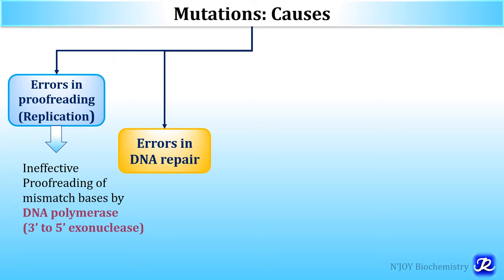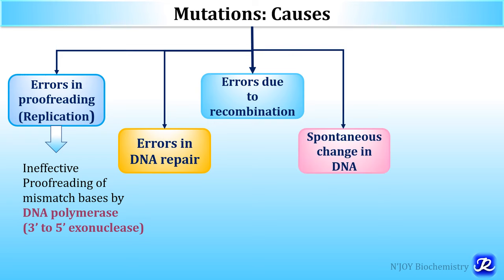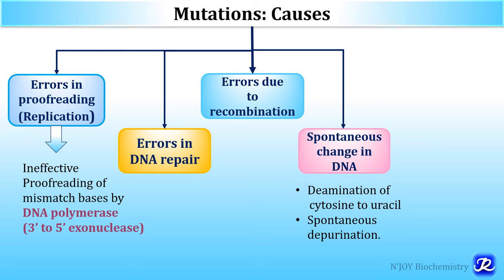The second important cause is errors in DNA repair, which can also result in mutation. The third cause of mutation is errors in DNA recombination. This DNA recombination occurs by translocation and rearrangement of genes or chromosome crossover. If this recombination is defective, it can lead to mutation. The fourth cause is spontaneous change in DNA, which can occur due to deamination of cytosine to uracil or spontaneous depurination.